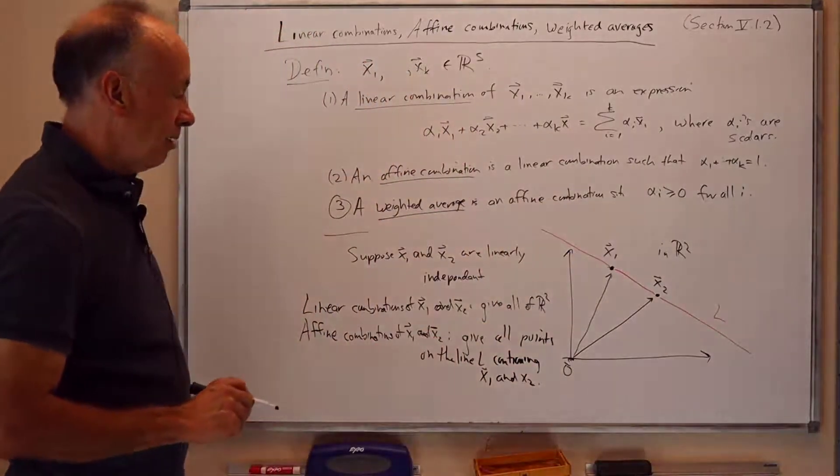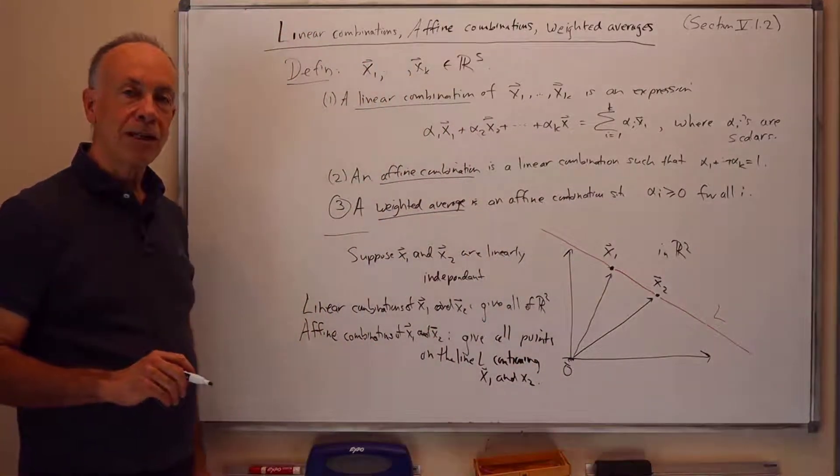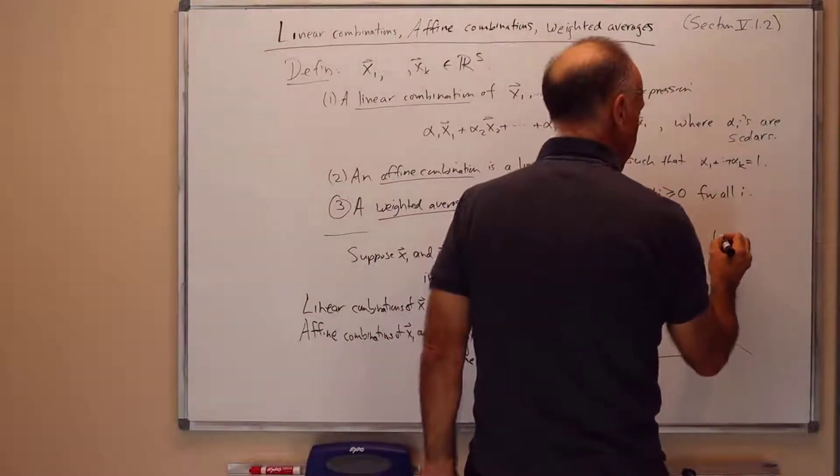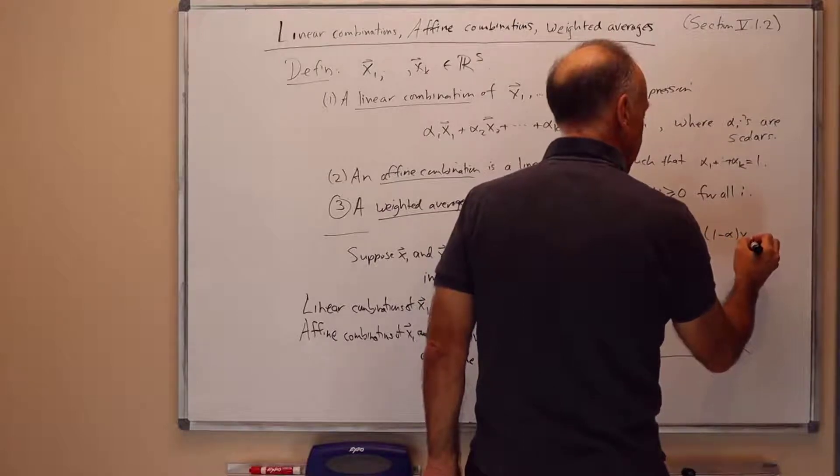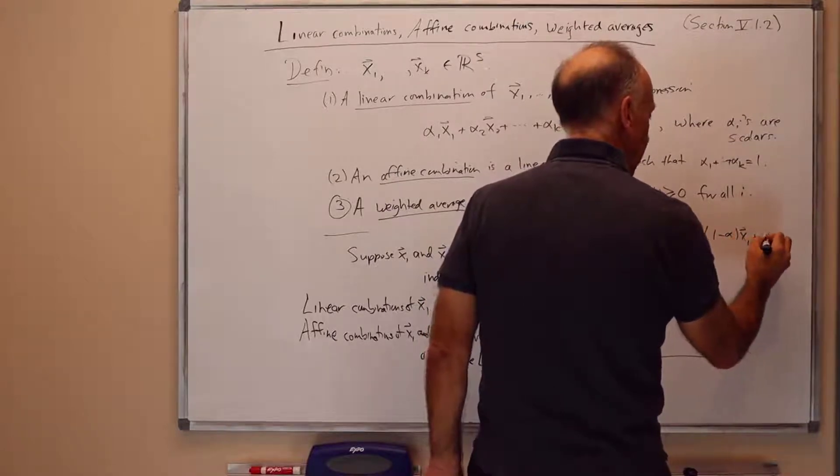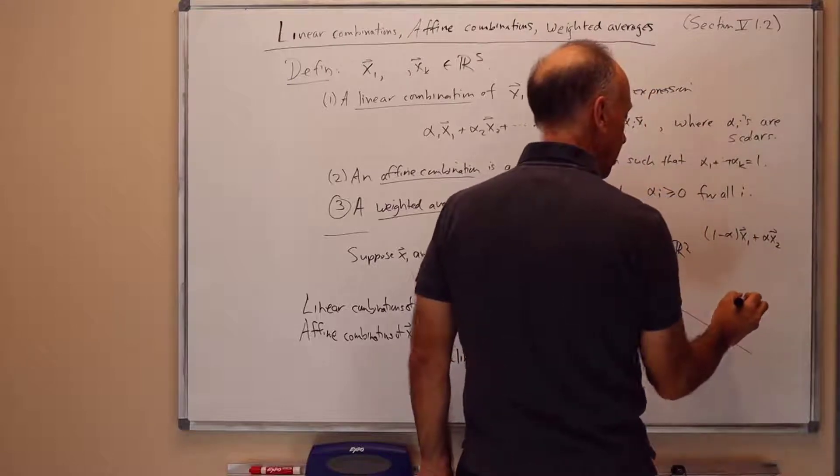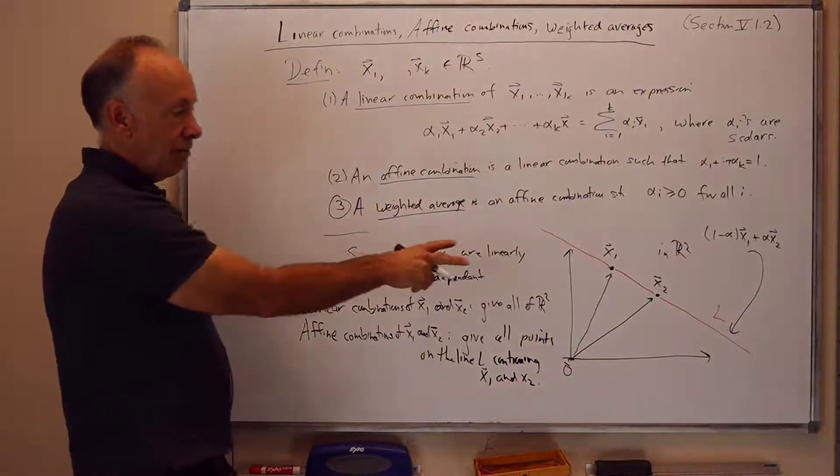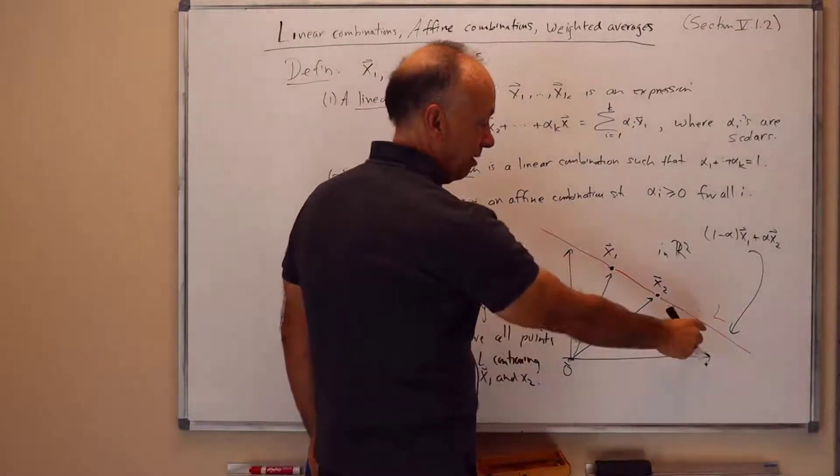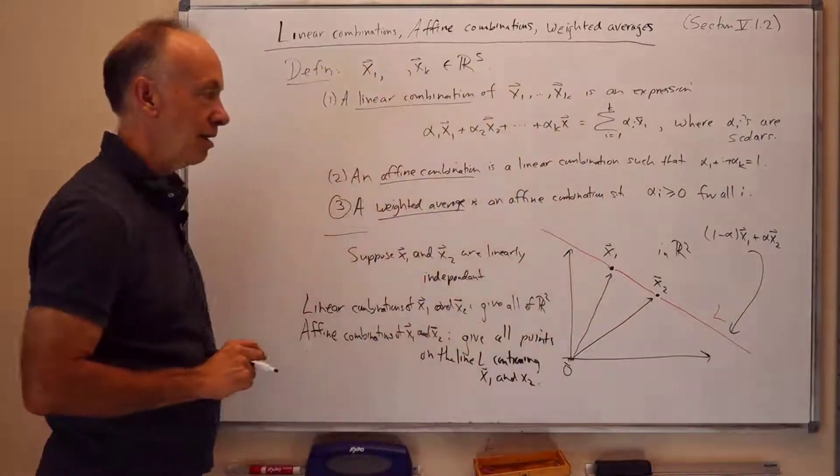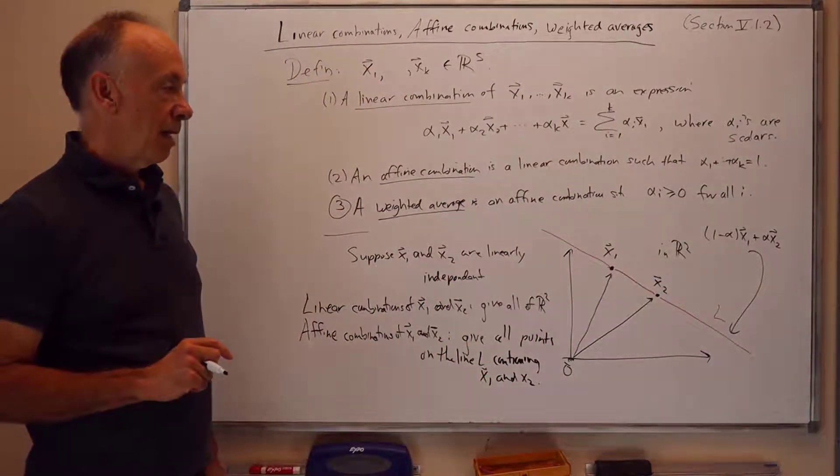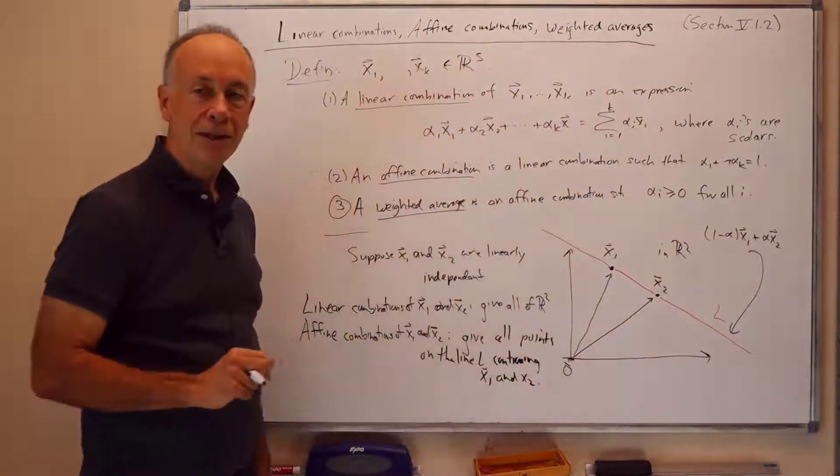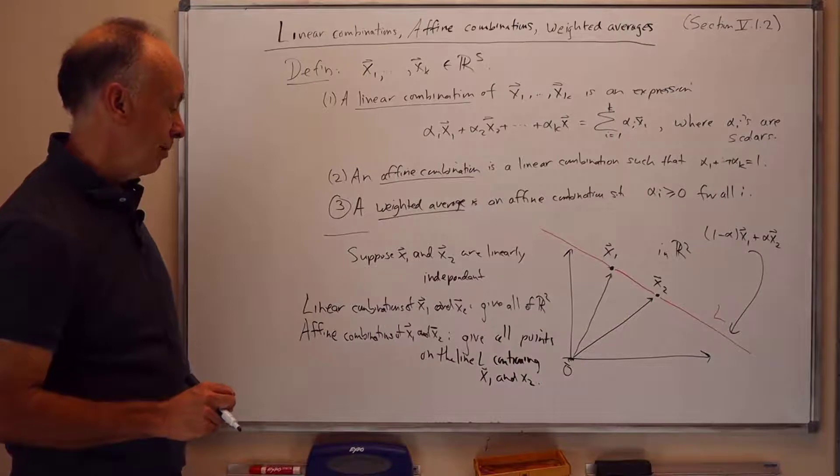And we saw this already from the previous presentation about linear interpolation, because with linear interpolation, we had expressions of the form 1 minus alpha times x1 plus alpha times x2. Last time we called them x's and y's. And these give points on the line, either between x1 and x2, or on the line outside of the line segment joining x1 and x2. But of course the coefficients sum exactly to 1, because 1 minus alpha plus alpha equals 1, and that makes it an affine combination.